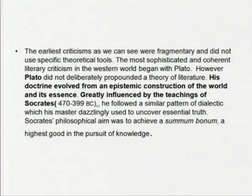Early criticism was fragmentary and did not use specific theoretical tools. The most sophisticated and coherent literary criticism in the western world began with Plato. However, Plato did not deliberately propound a theory of literature — his doctrine evolved from an epistemic construction of the world and its essence. He was greatly influenced by the teachings of Socrates (470–399 BC) and followed a similar pattern of dialectics, dazzlingly used to uncover essential truths. Socrates' philosophical aim was to achieve the highest good in the pursuit of knowledge.